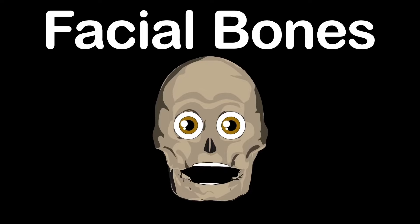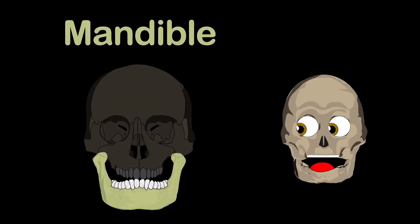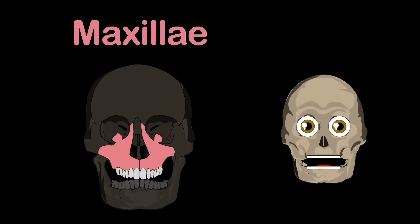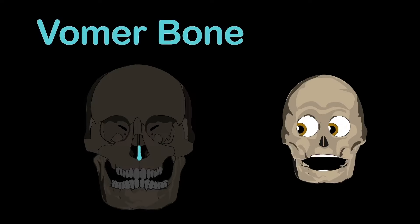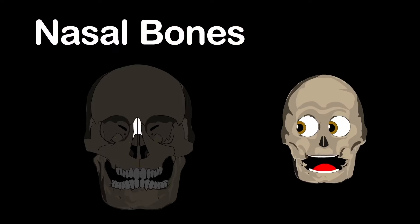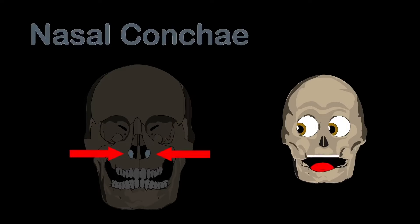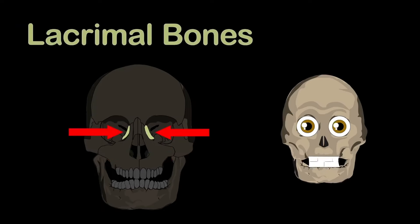Onto the facial bones — there are 14 of them. Here's the mandible, the only movable bone in the skull, and two maxillae, one on each side of the upper jaw. The vomer bone joins the ethmoid bone to create the nasal septum. Two palatine bones and the maxillae complete the hard palate. The two nasal bones form the bridge of your nose. Two zygomatic bones form the shape of your cheekbones. Two inferior nasal conchae are located in your nose as well. Two lacrimal bones run lateral to the maxillary bones.